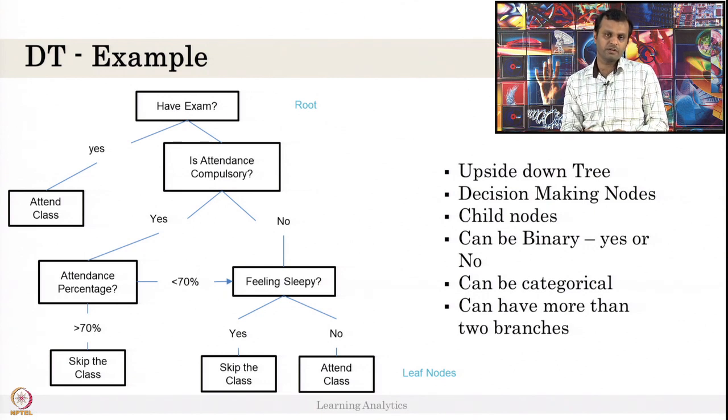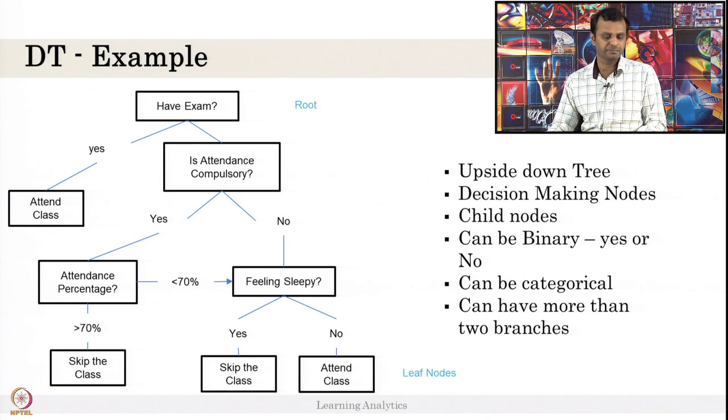How do you create a decision tree for a given values or the data you collected from the students' interaction with the system? The decision tree algorithm is developed in 1986 called ID3. Most recent algorithms like C4.5 have been developed from ID3 or its variants. The tree is top down tree and the search algorithm is greedy search algorithm. You have to search every possible branch, if not go to the next branch.